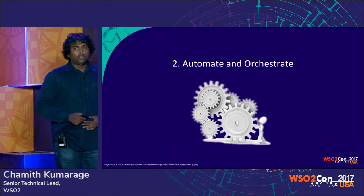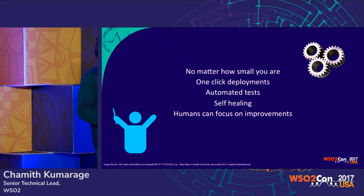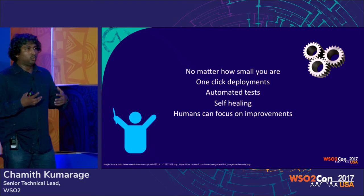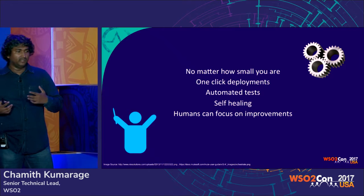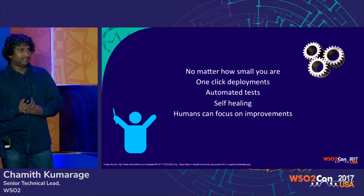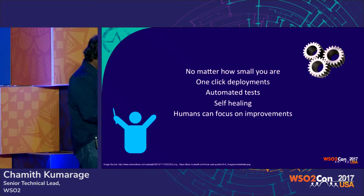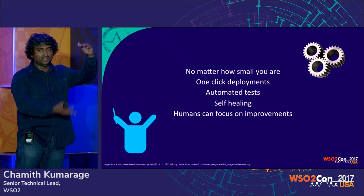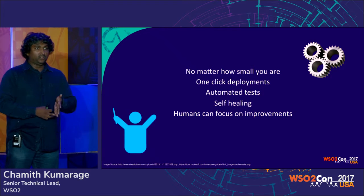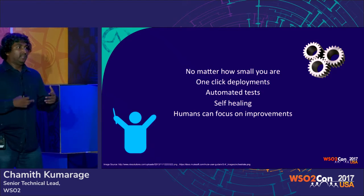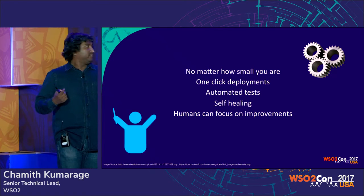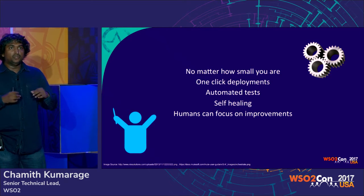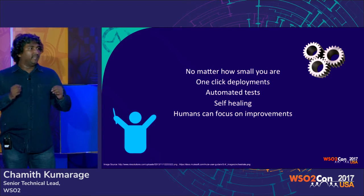Number two: automate and orchestrate. It doesn't matter how big or small you are — you should always have automation in place. There shouldn't be any case where you run things manually. Everything has to be automated: image baking, deployment description — what we call infrastructure as code, where you write code to describe your infrastructure — application deployment, service deployment. Having automation adopted in very early stages allows you to scale at any point.